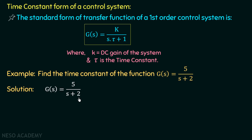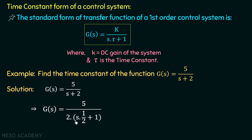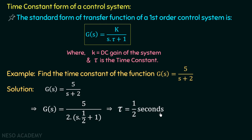To convert this function to the standard time constant form, we take 2 common from the denominator to get G(s) = (5/2) / (s*(1/2) + 1). Comparing with the standard form, we get tau = 1/2, so the time constant is 0.5 seconds.